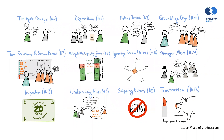Then we have the manager or stakeholder alert, where the Scrum Master allows the intervention of other people into the team matters.